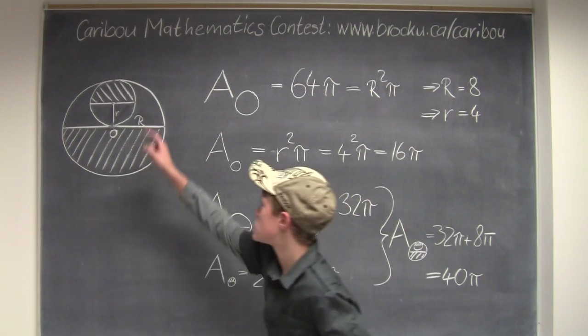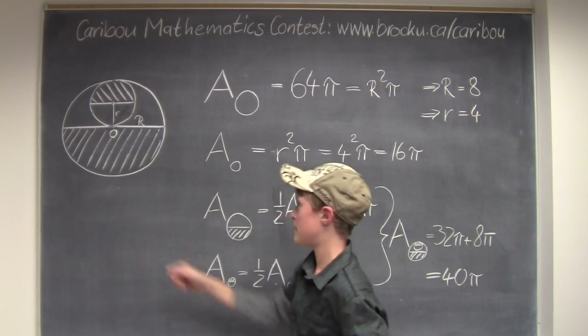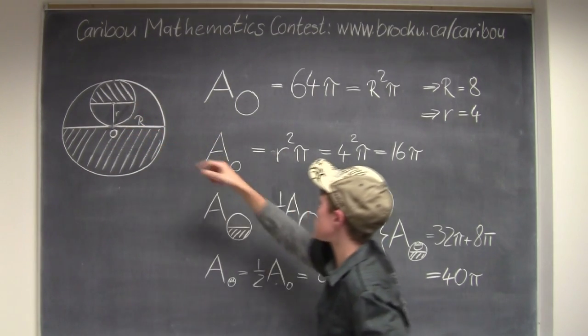Okay, the question is, what is the total area of the shaded region? This is a circle, and O is the center of the circle.